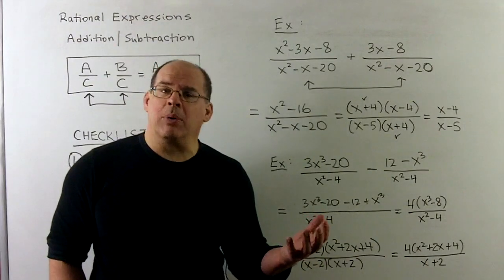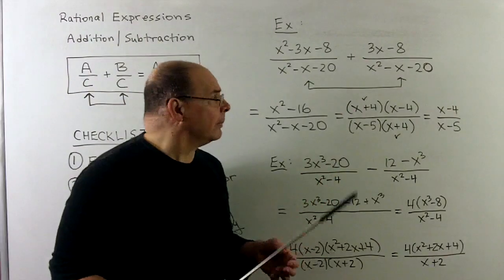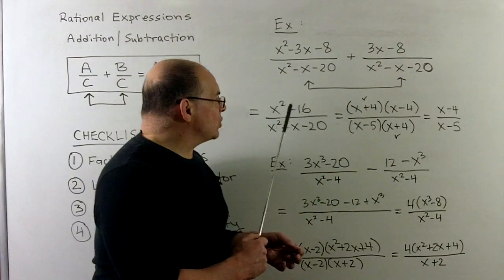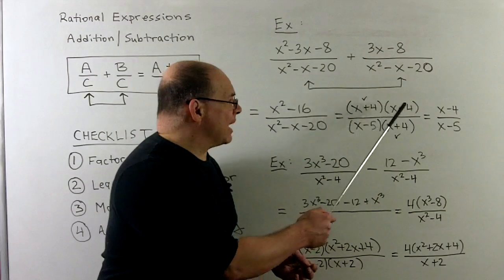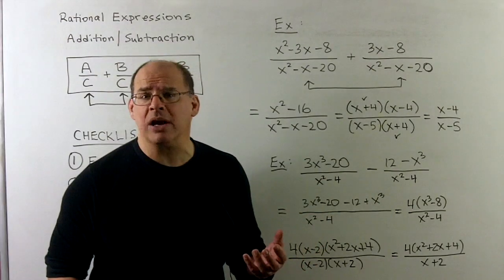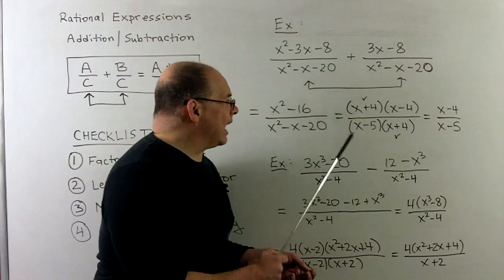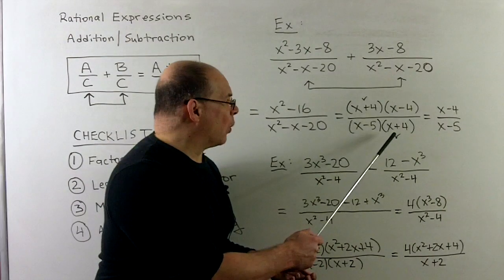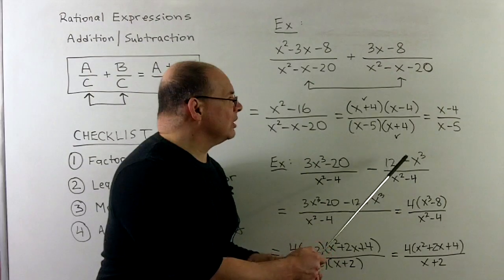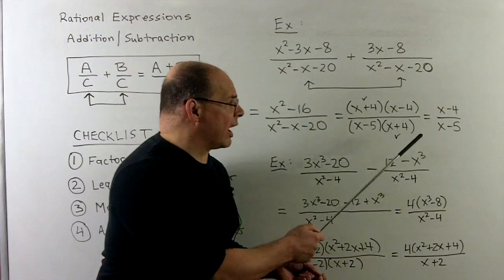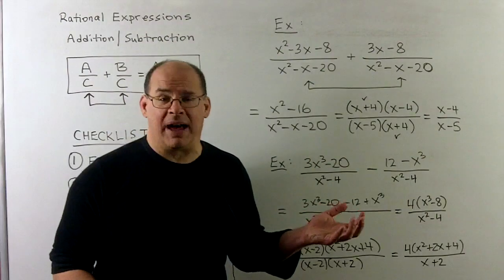Now we can simplify further because things will factor. In the numerator, x² minus 16 factors as (x+4)(x-4), a difference of two squares. Factoring the denominator gives (x-5)(x+4). The (x+4) factors cancel, leaving x minus 4 over x minus 5. That doesn't simplify any further.